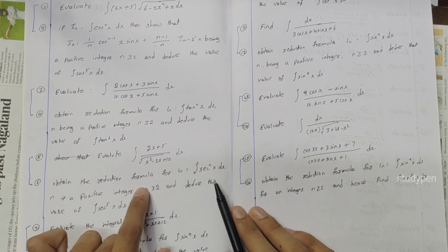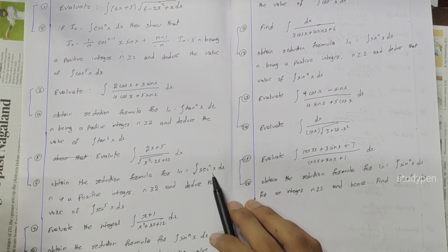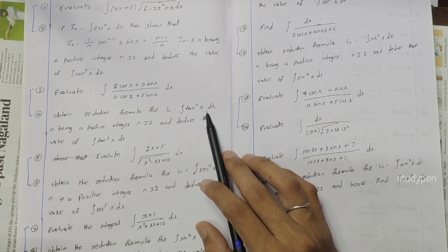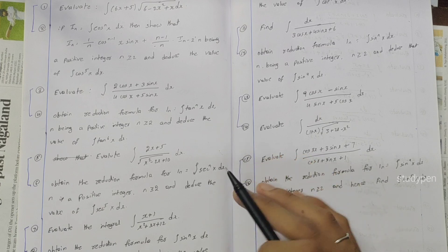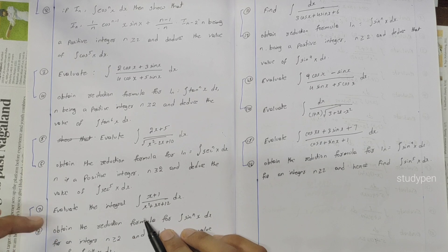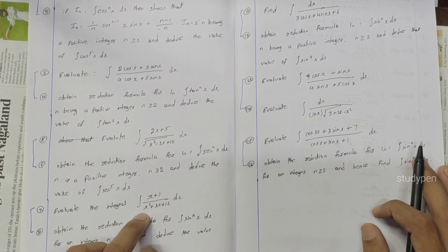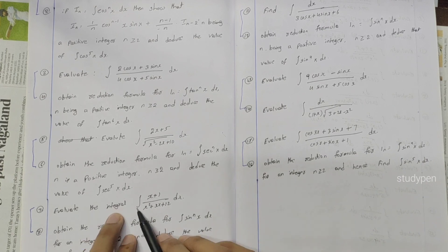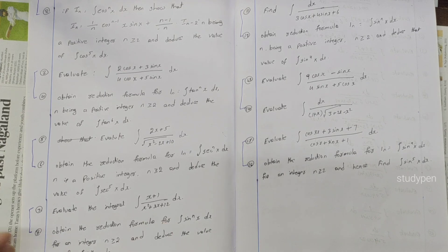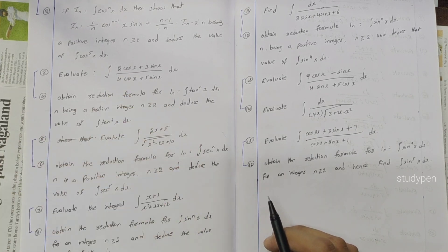Next: obtain reduction formula for integral sec^n x dx, then integral tan^n x dx, and integral sin^n x dx. These are the reduction formula questions.